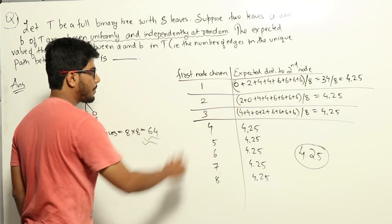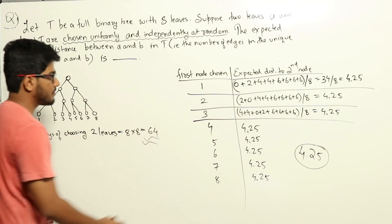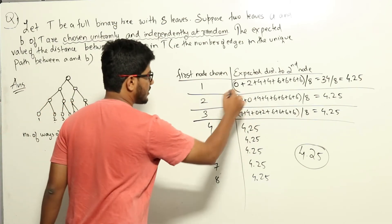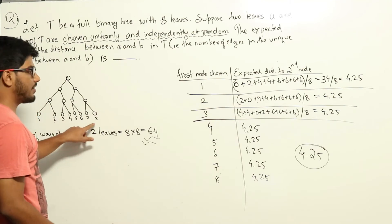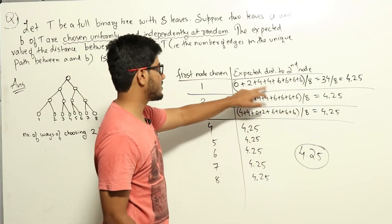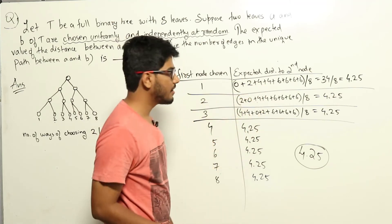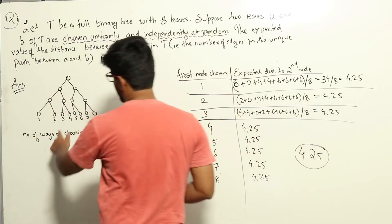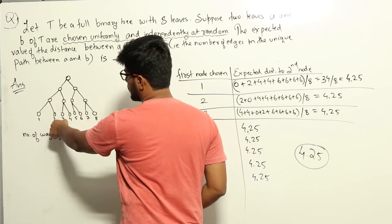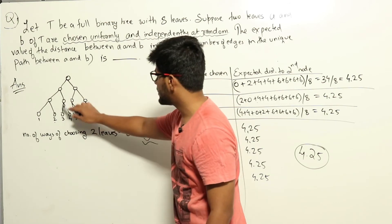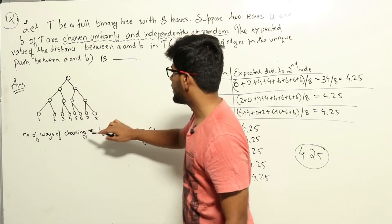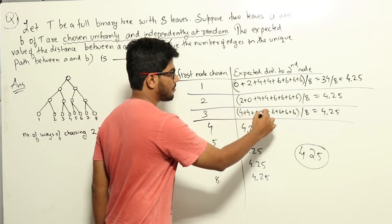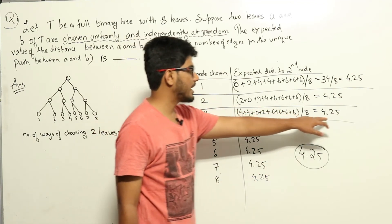Similarly, if the first node chosen is 2, the distance from 2 to 1 is 2, from 2 to 2 is 0, from 2 to 3 and 4 is 4, and from 2 to 5, 6, 7, 8 is 6 — that is 4 times 6. We get the same expression as before, only 0 and 2 swap with each other. That is again 34/8 = 4.25. Now if the first node chosen is 3: from 3 to 1 is 4, 3 to 2 is 4, 3 to 3 is 0, 3 to 4 is 2, and from 3 to 5, 6, 7, 8 is 6. Again we get 4 + 4 + 0 + 2 + 4×6 = 34/8 = 4.25.